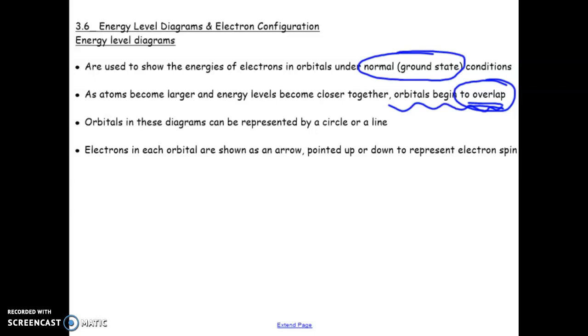So we are going to represent orbitals in a diagram. So an orbital, remember that's a region of space where we can find an electron, can be shown in two different ways. We can use a circle or we can use a line. So this can be an orbital or this can be an orbital.